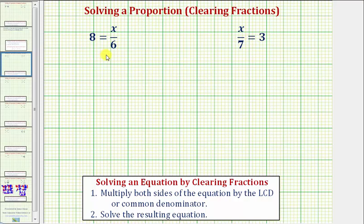So looking at the two equations below, notice how they're not in the form of most proportions because we have a whole number on one side of the equation. But because we can write eight as a fraction with a denominator of one, and we can write three as a fraction with a denominator of one, these can be considered proportions.